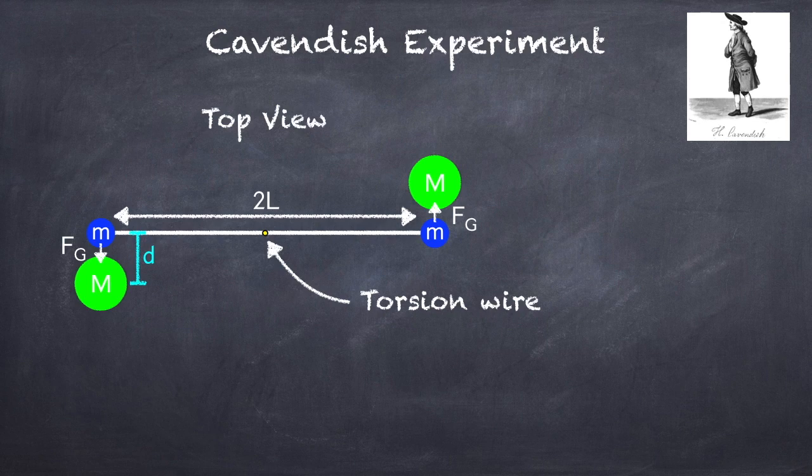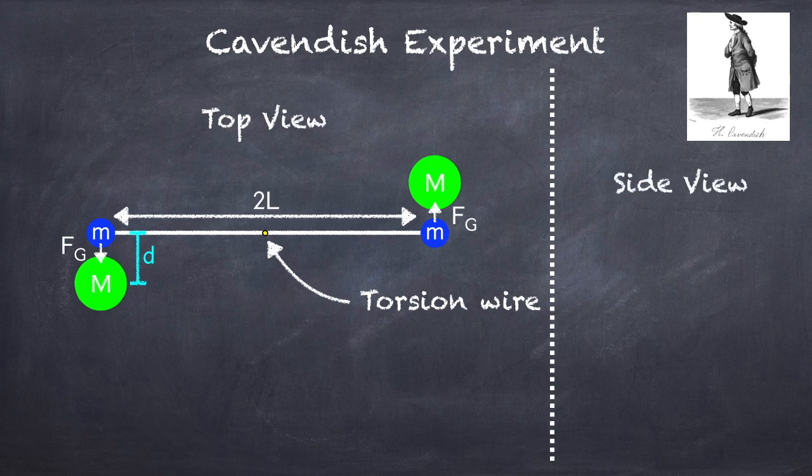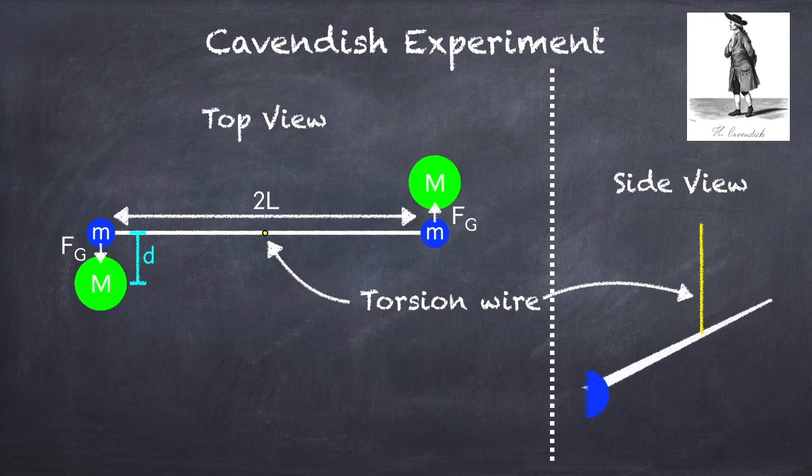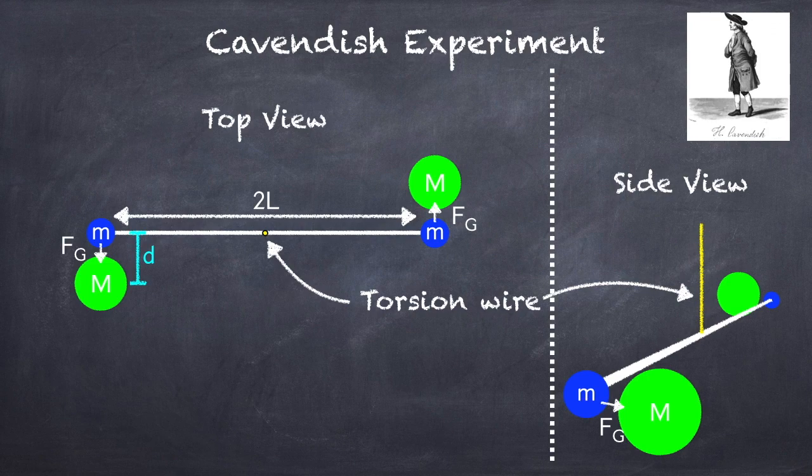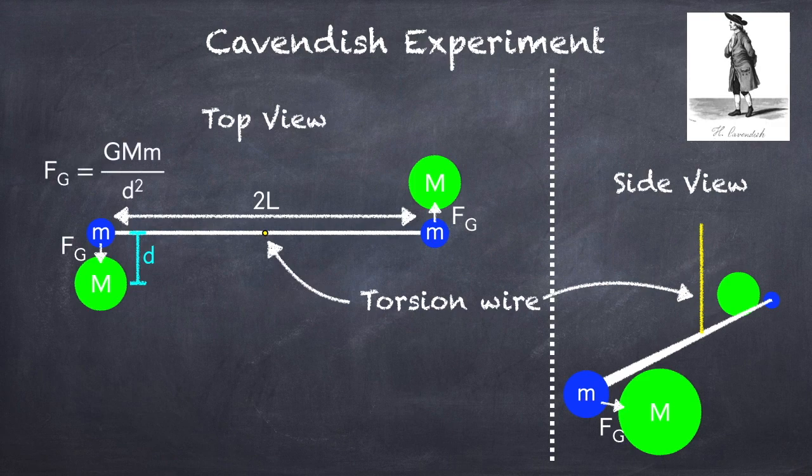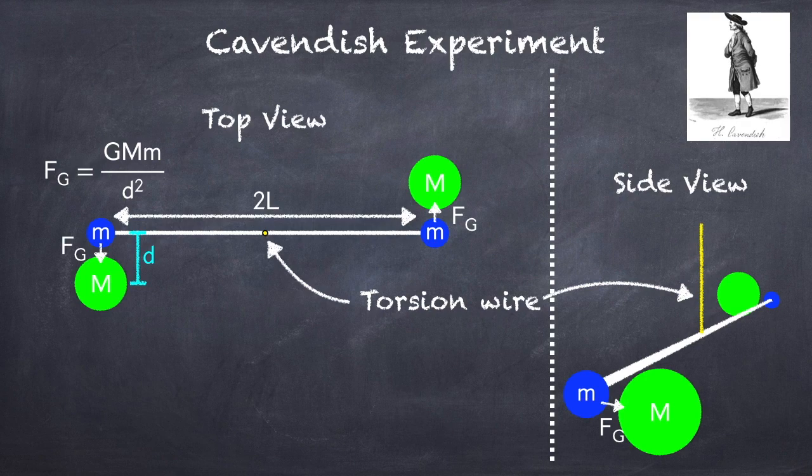I'm going to draw a side view of this just to make sure it's clear what's going on. Here we have our torsion wire, and hanging from it is the rod with the blue masses on each end, and then we place the larger green masses next to the blue masses. And so the blue mass feels a gravitational attraction to the green mass. We can now write down the gravitational forces, and notice that in this case, unlike in the case with the Earth, we know both masses. Which means the only thing we don't know here is Newton's constant. So if we can measure this force, we can figure out what Newton's constant is.